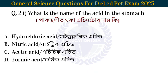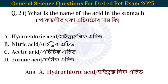Next question: What is the name of the acid in the stomach? The acid found in the stomach is hydrochloric acid.